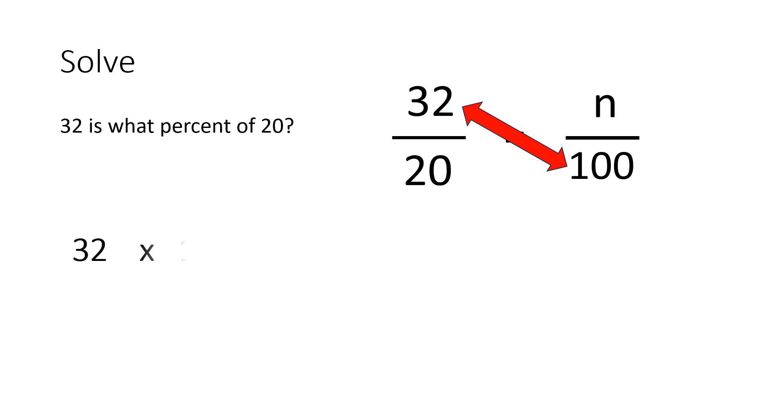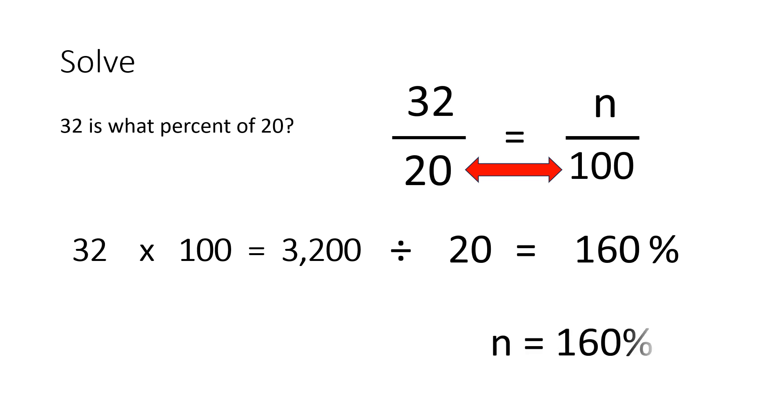32 times 100 is 3,200. We will then take this number and divide it by whatever number is left. In this sentence, we only have the number 20. So, 3,200 divided by 20 will equal 160. And we write the percent symbol and this is the answer.